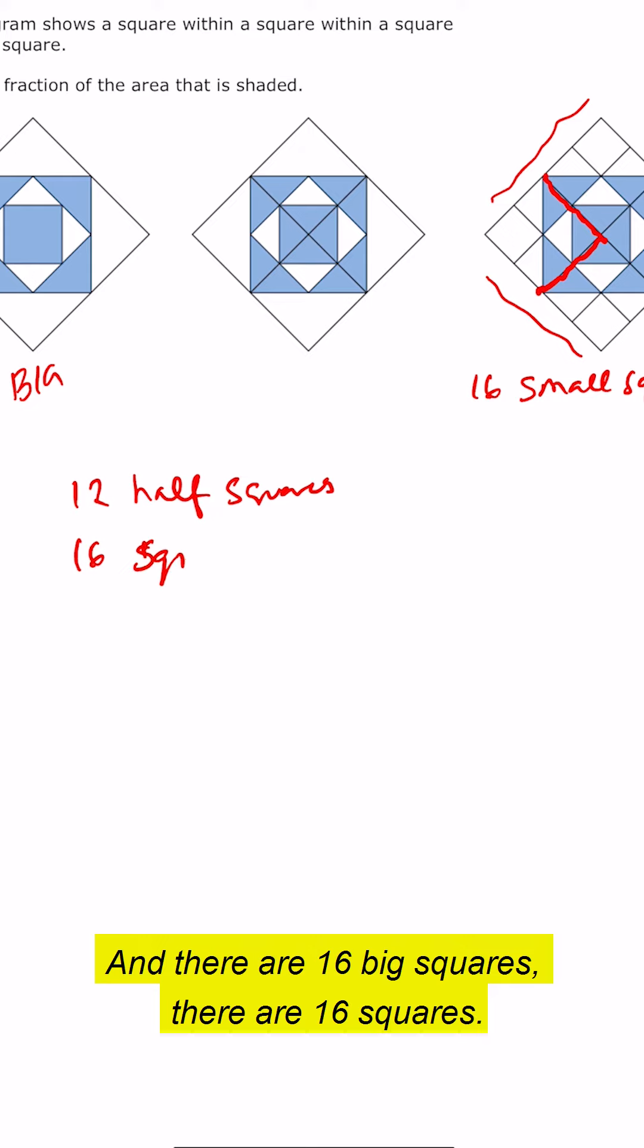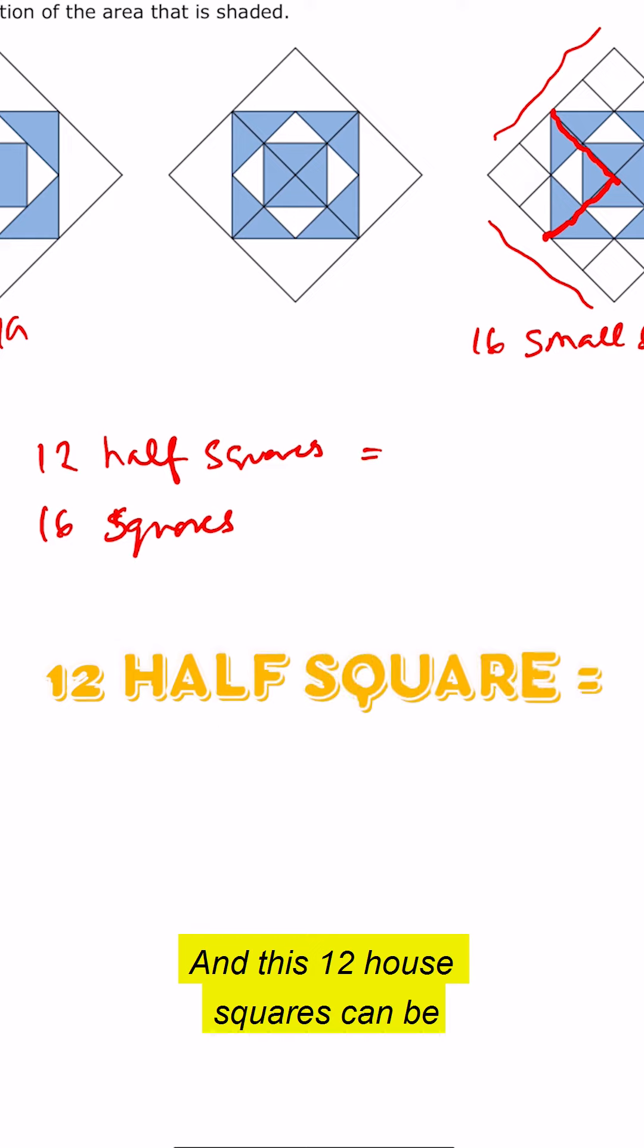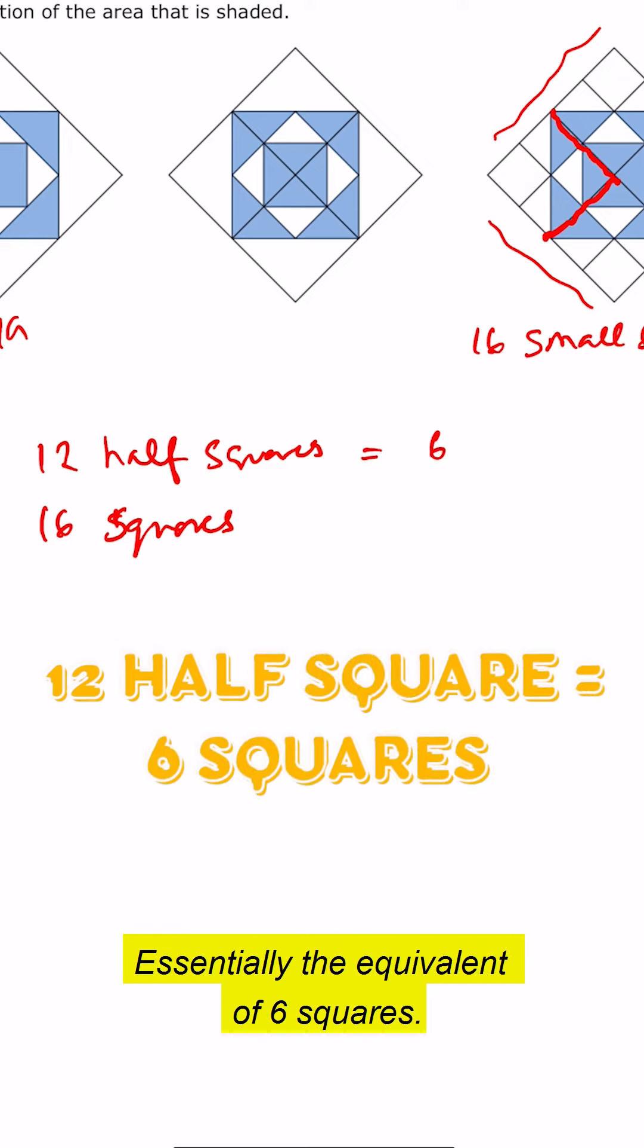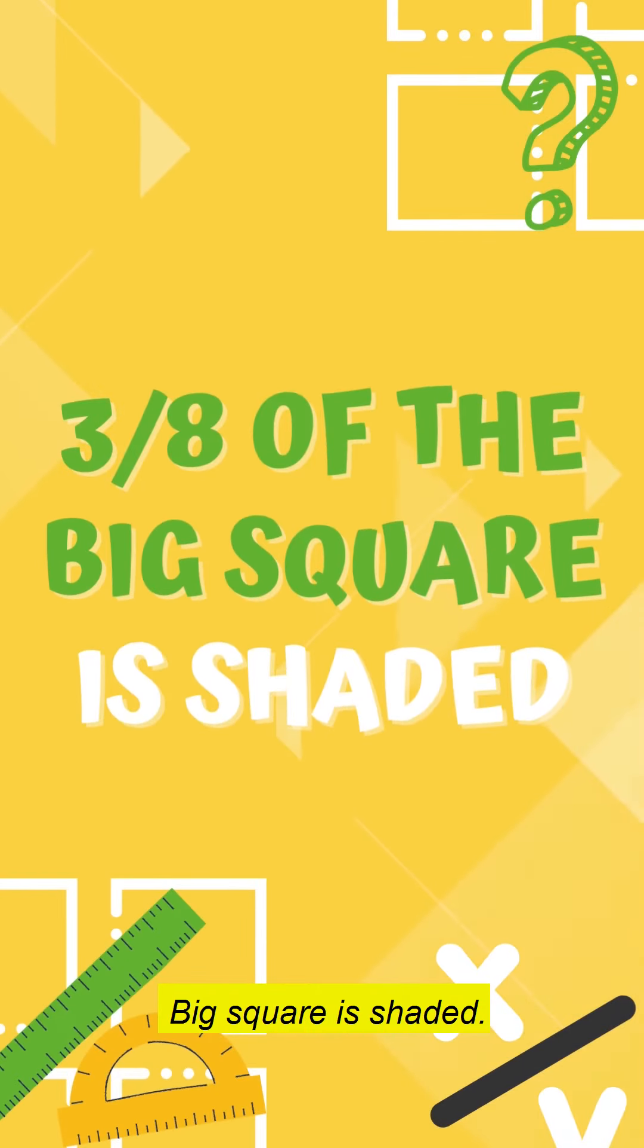There are 16 squares and these 12 half squares are essentially the equivalent of six squares. So it's six over 16 or basically three by eight. So three eighths of the big square is shaded.